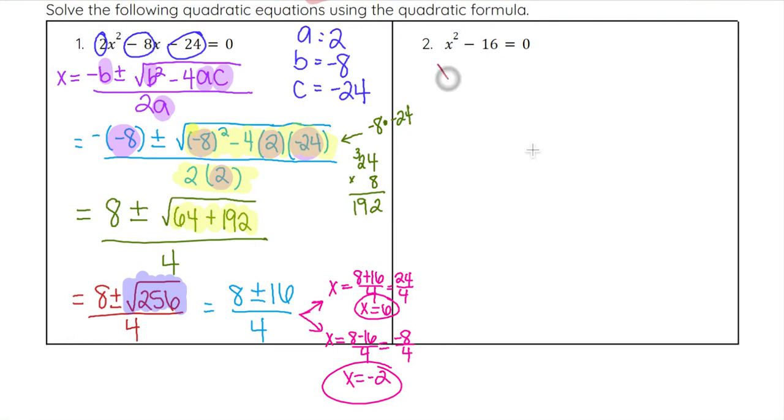Even though there are only two terms, we can think of this as x squared plus 0x minus 16 equals 0. a is the 1 in front of x squared, c is negative 16, and b is 0 since it's not there.